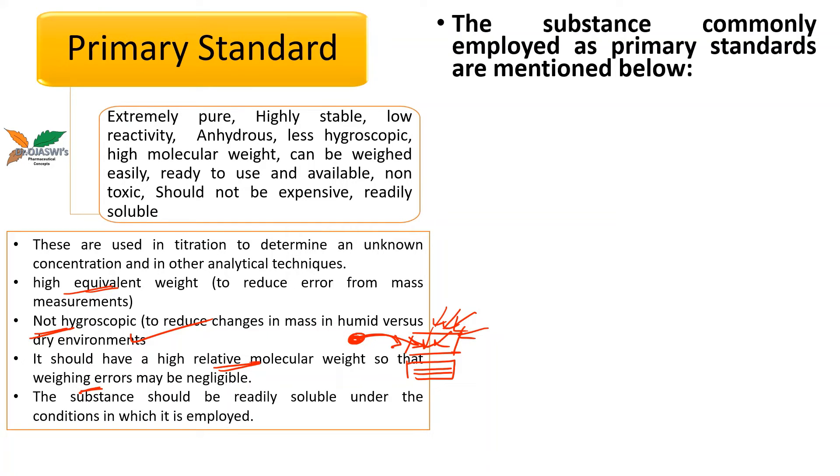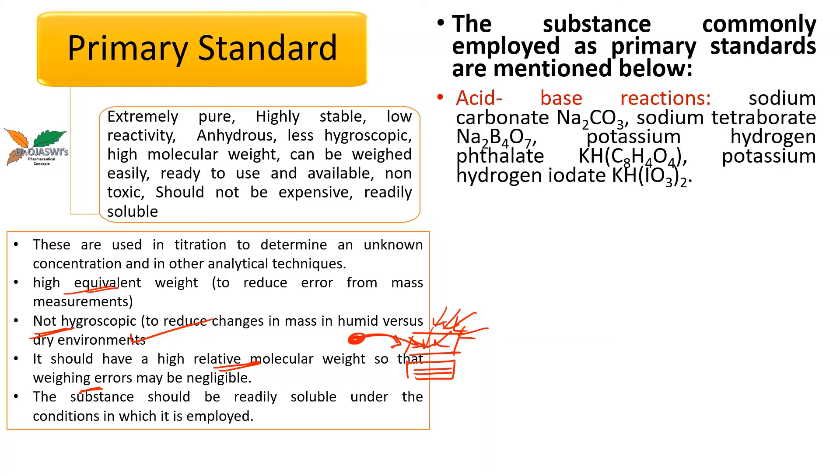The substances which are commonly employed as primary standards are mentioned here. For acid-base titrations, we usually use sodium carbonate, sodium tetraborate, potassium hydrogen phthalate, potassium hydrogen iodate, as some of the examples of primary standards.